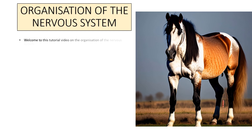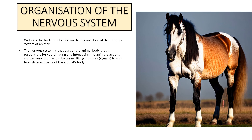Welcome to this tutorial video on the organization of the nervous system of animals. The nervous system is that part of the animal body that is responsible for coordinating and integrating the animal's actions, and also receiving sensory information by transmitting impulses or signals to and from different parts of the animal body.